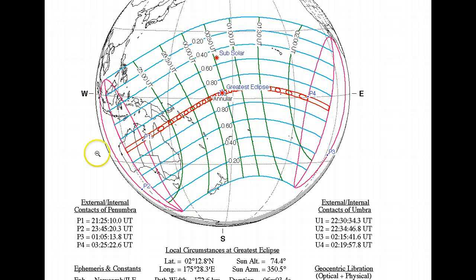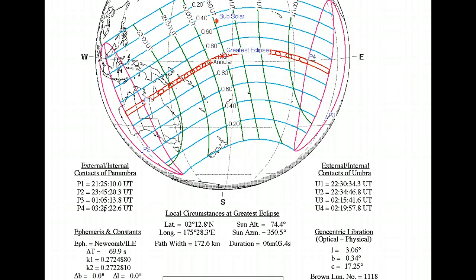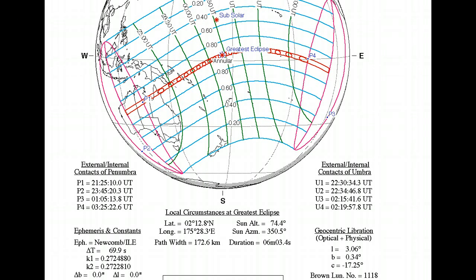The point is only in that part of the world the eclipse will be visible in a partial way. Now we're going to look at the times. The first contact with the eclipse is marked as P1 and the time shows 21 hours 25 minutes Universal Time — this is where the eclipse is going to start. The last contact is marked as P4, which is 3 hours 25 minutes Universal Time.